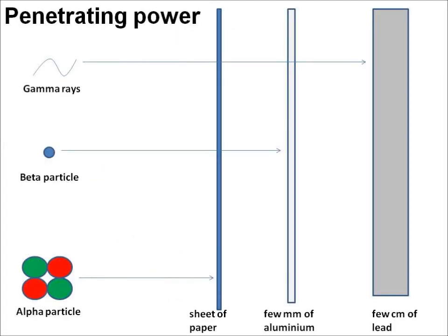Alpha particles, beta particles and gamma rays have different penetrating powers, and by this we can tell them apart. Alpha particles will be stopped by a sheet of paper or skin. A beta particle will go through a sheet of paper but will be stopped by a few millimetres of aluminium. Gamma rays can penetrate a sheet of paper and aluminium but will be stopped by a few centimetres of lead.